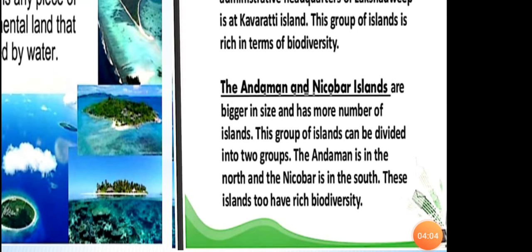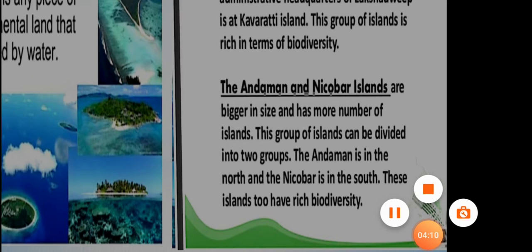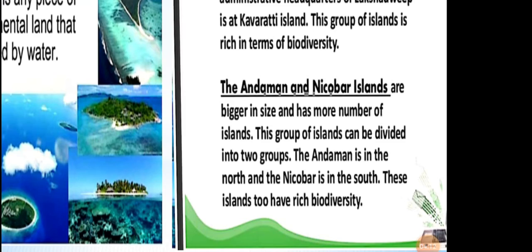Here is one interesting thing I want to tell you. During colonialism, when the British ruled over India, they built a jail in the Andaman and Nicobar islands. That jail is known as the Cellular Jail, which means the prisoners are kept in individual cells.